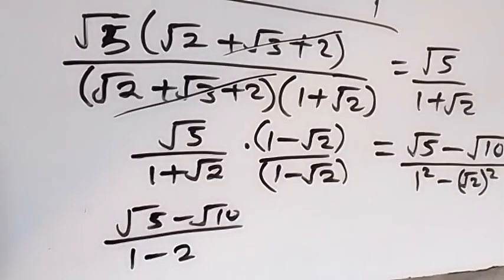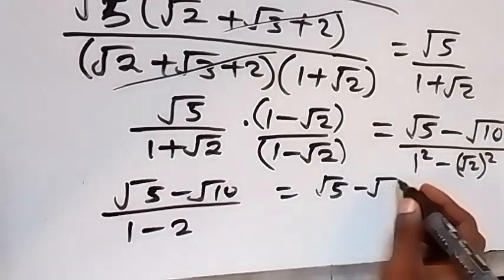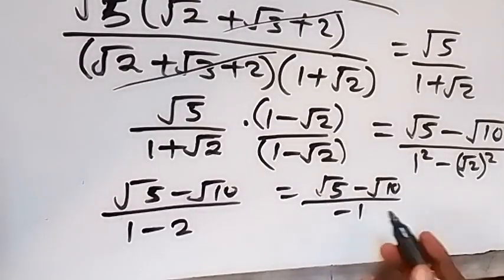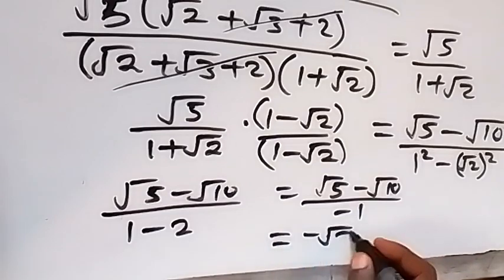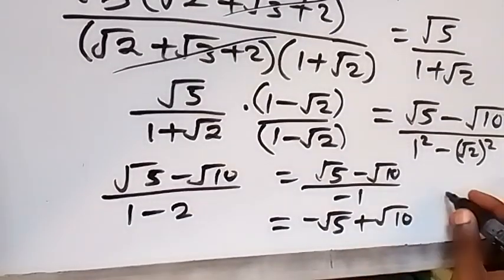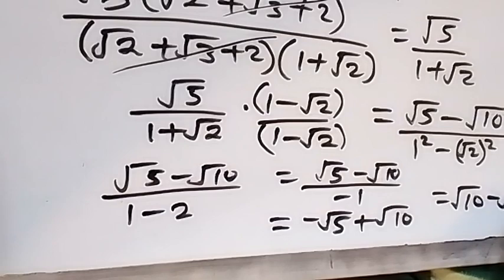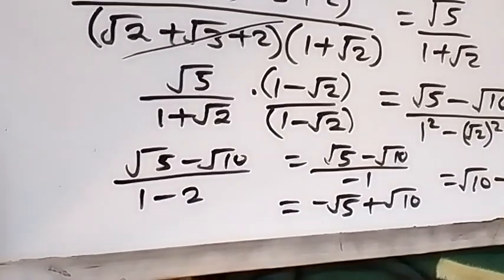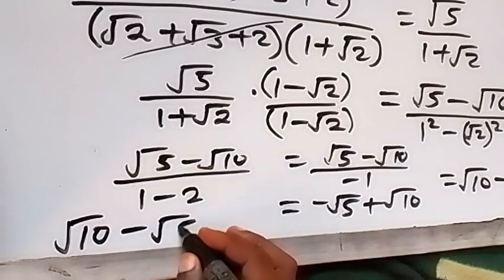Applying that identity gives root 5 minus root 10, divided by 1 minus 2, which is negative 1. When we divide through by negative 1, this gives minus root 5 plus root 10, which we can write finally as root 10 minus root 5. So the final answer is root 10 minus root 5.